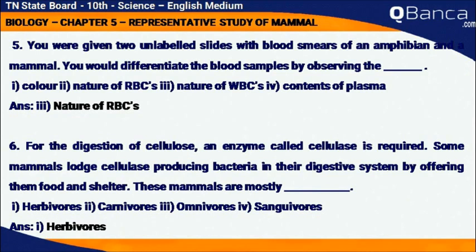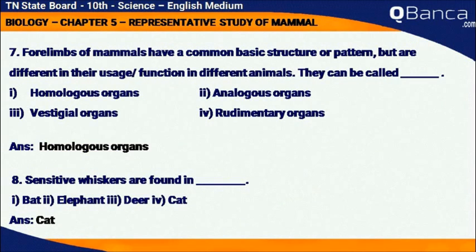For the digestion of cellulose, an enzyme called cellulase is required. Some mammals lodge cellulase-producing bacteria in their digestive system by offering them food and shelter. These mammals are mostly herbivores.